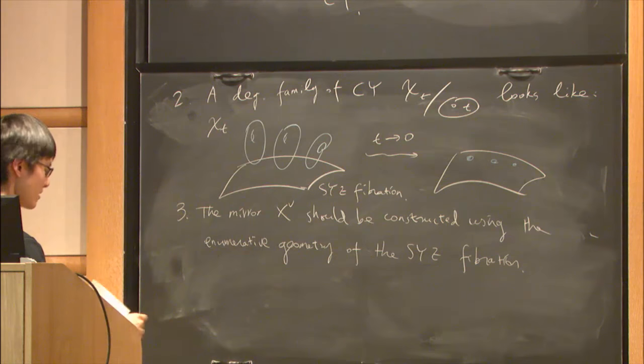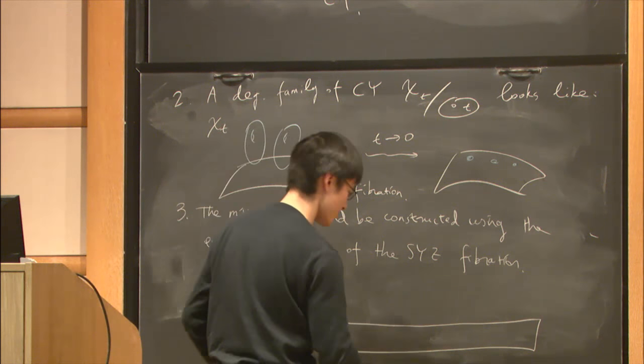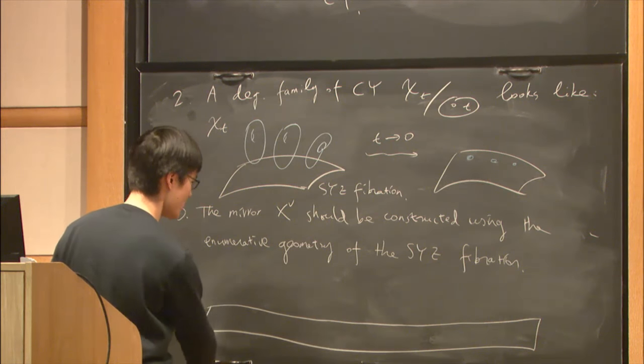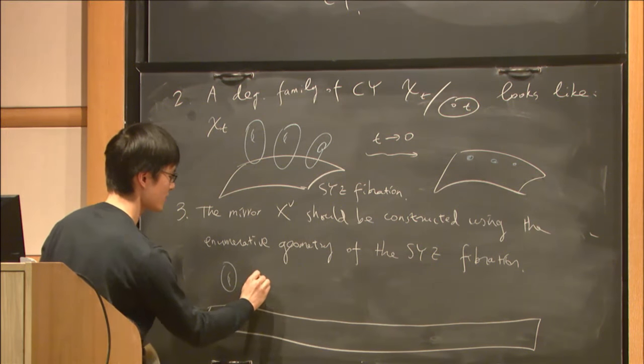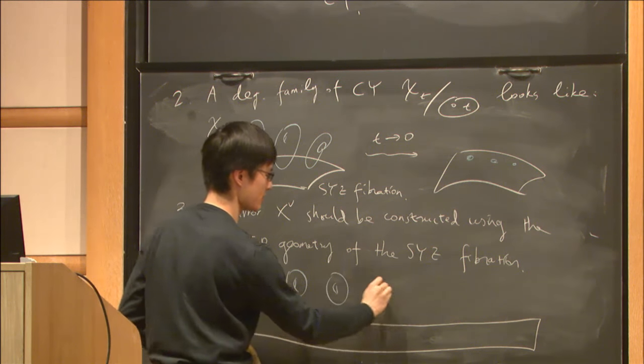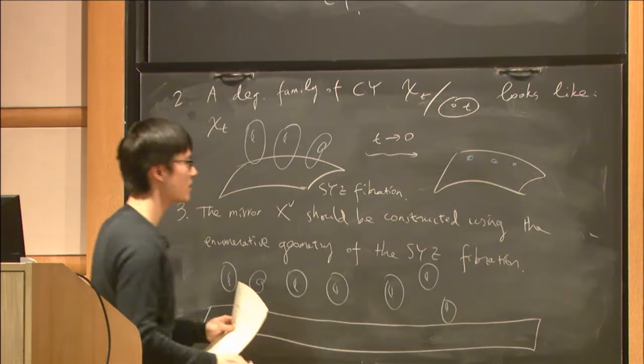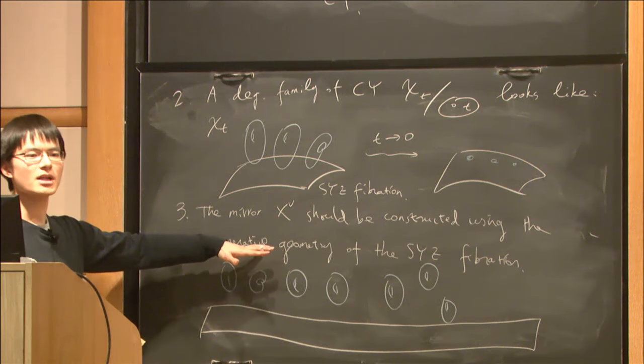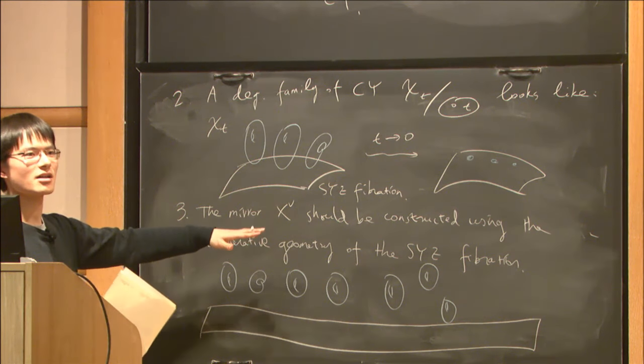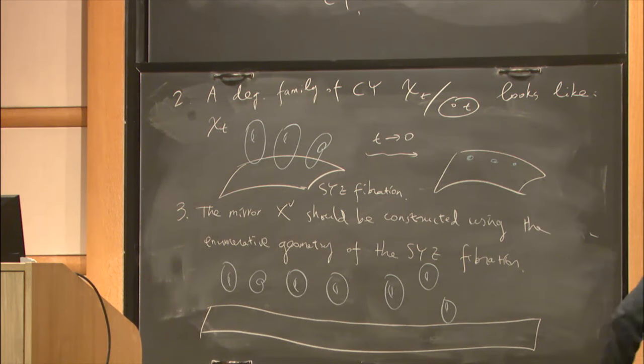By this, I mean we have an SYZ fibration, a torus fibration over some base with lots of torus fibers. We want to do enumerative geometry, which means counting curves with boundaries on fibers of this fibration.